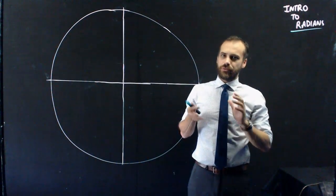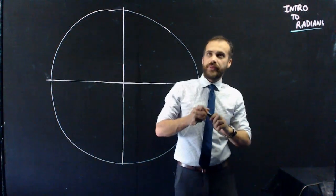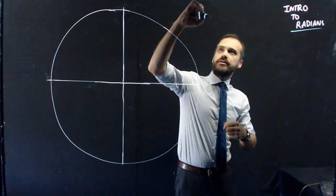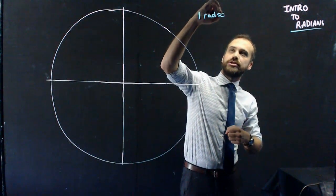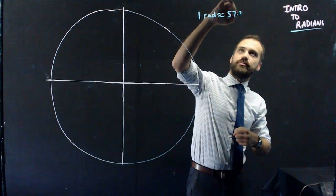It's really, really simple to understand what a radian is, I think. Now, one radian is equal to approximately 57.3 degrees.